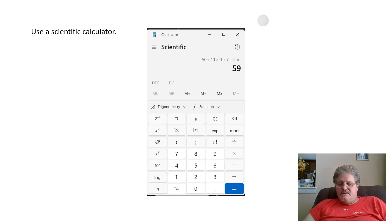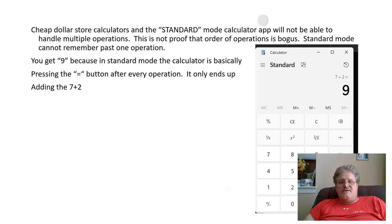Calculators already know order of operations. However, if you use a dollar store calculator, a real simple calculator, or if your calculator app on your phone or computer is set in standard mode, in that mode or those cheap calculators, they don't have a memory to keep track of more than one operation at a time.